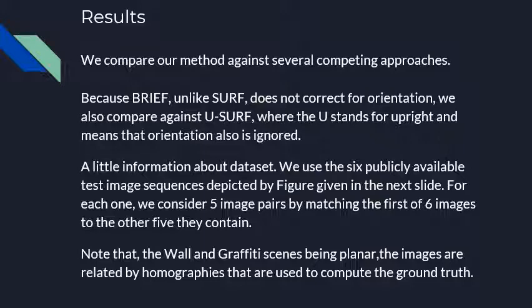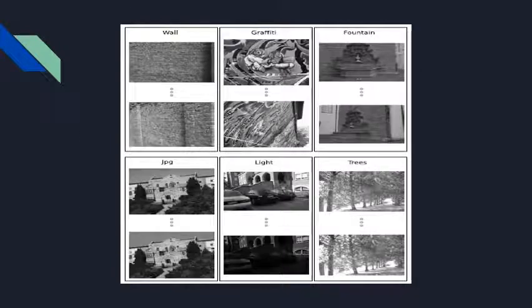Regarding the dataset: it consists of 6 test images, each with 5 image pairs. The 6 test images are wall, graffiti, fountain, JPEG, light, and trees. This dataset is specifically designed to test robustness to viewpoint changes — specifically in wall, graffiti, and fountain. Compression artifacts are tested in JPEG, illumination changes are tested by light, and image blur is tested by trees.